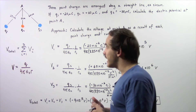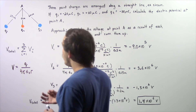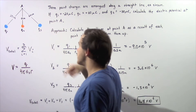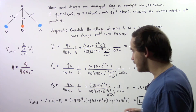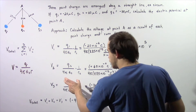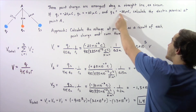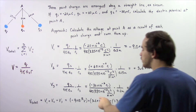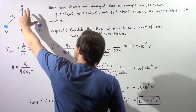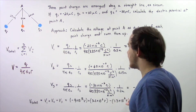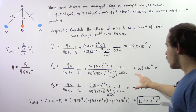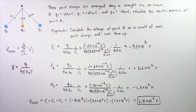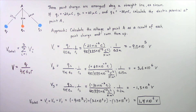Finally, we calculate the voltage at point A as a result of point charge Q3. We plug in Q3, which is negative 30 times 10 to the negative 6 coulombs, and R3, which is 0.2 meters, the same as in the first case. Plugging those quantities in, we get negative 1.3 times 10 to the 6 volts.